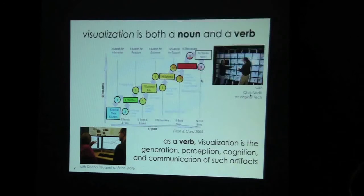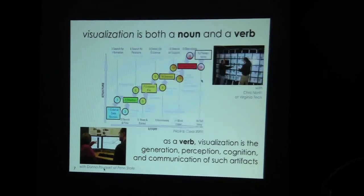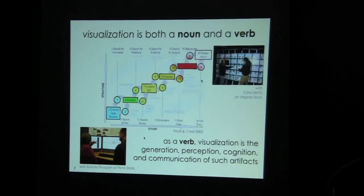Chris North is one of the most important information visualization people in the world, and this is an example of a 50-screen setup where he's tried to do dynamic visualization on gigapixel displays. Here's another example — Donna Piquet was one of my postdoc mentors at Penn State, and we're using multiple different screens to look at geographic patterns of hotel visitors moving around central Pennsylvania.